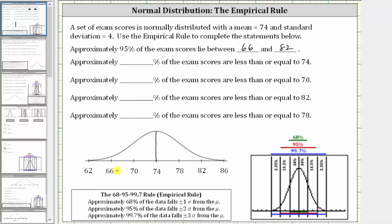Next, approximately what percent of exam scores are less than or equal to 74? Well, notice 74 is at the center of the distribution, and therefore the percent of exam scores less than or equal to 74, represented by this area here, is approximately 50%.